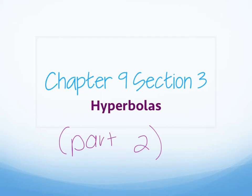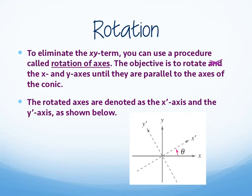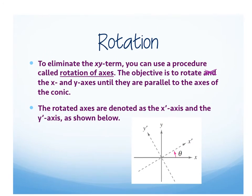Section 9.3 part 2 covers the rotation of conics — what happens when we take conics that have a horizontal or vertical axis and rotate them around the unit circle. In order to rotate these, there's going to be an XY term and we have to get rid of it. We use a procedure called rotation of the axis to eliminate the XY term. The objective is to rotate the x and y axes until they're parallel to the axis of the conic. The rotated axes are denoted as x prime and y prime.